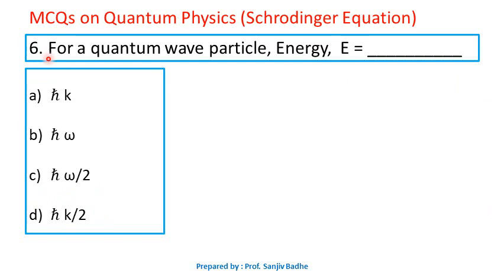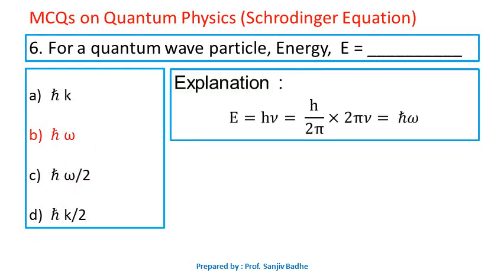Question number 6. For a quantum wave particle, energy E equals — options are ℏk, ℏω, ℏω/2, or ℏk/2. We know E equals hν, where h is Planck's constant and ν is frequency. Multiplying and dividing by 2π, we get h/2π times 2πν. Here h/2π is ℏ and 2πν is ω, the angular frequency. Therefore E equals ℏω. Option B is correct.